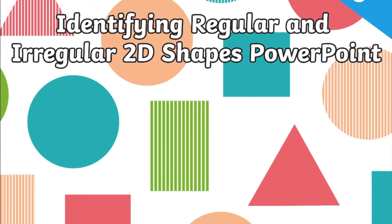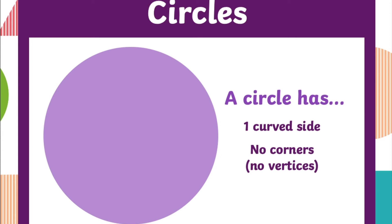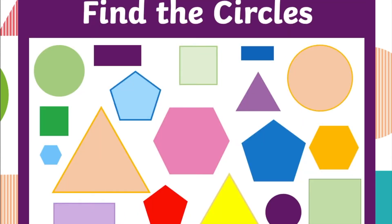This identifying regular and irregular 2D shapes powerpoint is great for getting your children to learn facts about different shapes. For example how many corners they have or how many sides. They then have to find that shape within a bunch of other shapes.